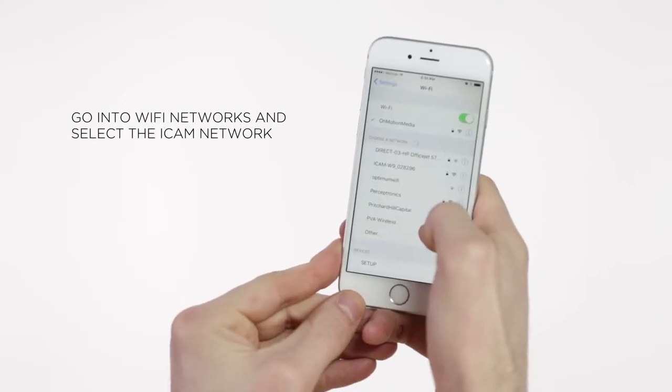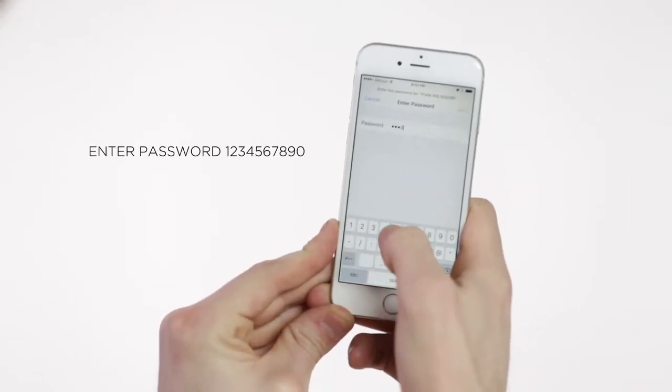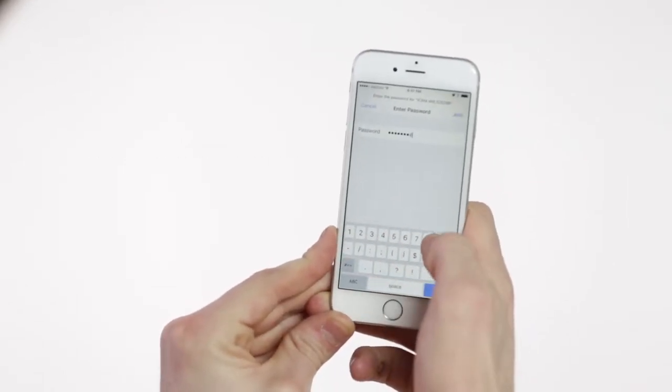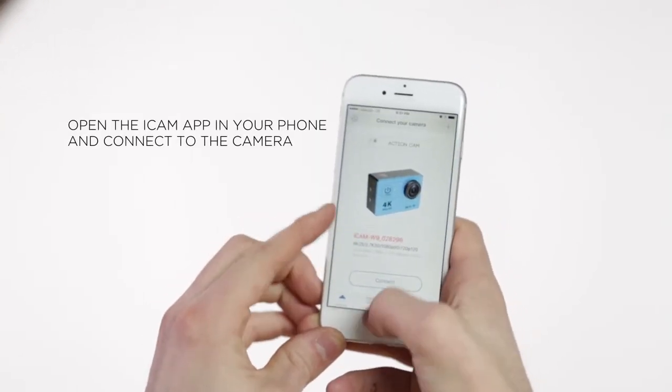Go into Wi-Fi networks and select the iCam network. Enter password 1234567890. Open the iCam app in your phone and connect to the camera.